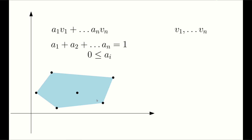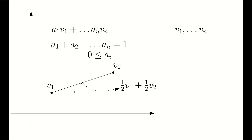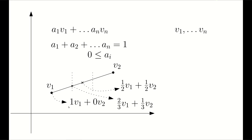Convex combination is very similar to the affine combination, except that we require these coefficients to be positive. If you have a number of points in d-dimensional space, the convex combination of them will create the convex hull of the set of points. Any point inside the convex hull can be written as a convex combination of the vectors. For example, consider two vectors v1 and v2. The midpoint of the line segment connecting v1 to v2 can be written as half v1 plus half v2. If you cut this line segment into three equal pieces, this point can be written as two-thirds v1 plus one-third v2. In particular, you can write any point on this line segment as a convex combination of v1 and v2.